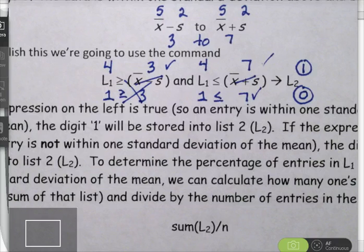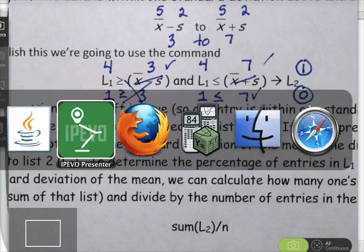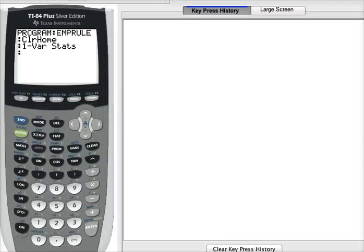Let's see how we get this logic then into the graphing calculator. So first we need list 1, second 1,